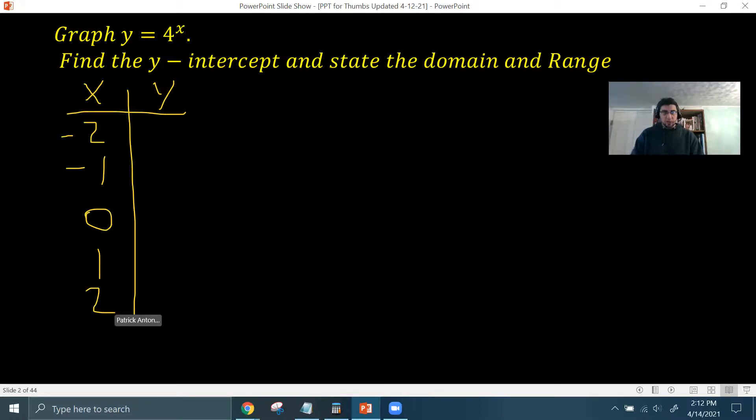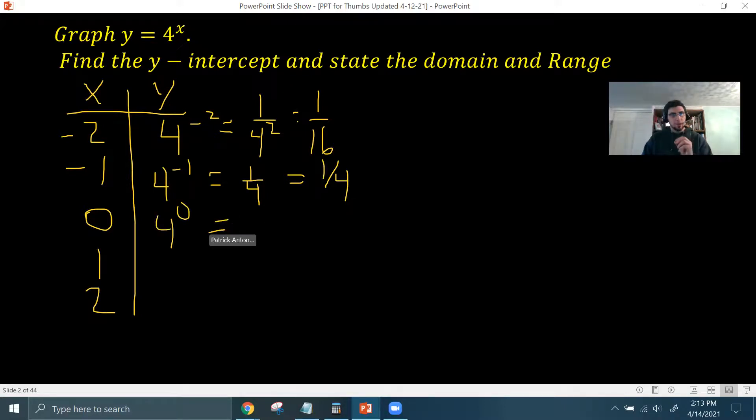If x is negative 2, then y is going to be 4 to the negative 2 power, which is 1 over 4 squared, which is 1/16. Okay, very small y value. If x is negative 1, it's going to be 4 to the negative 1 power, which is 1 over 4, which is 1/4. If x is 0, then you would have 4 to the 0 power. And remember, any non-zero number to the power of 0 is going to be 1. And then when x is 1, you'd have 4 to the first power, which is 4. And then when x is 2, you'd have 4 squared, which is 16.